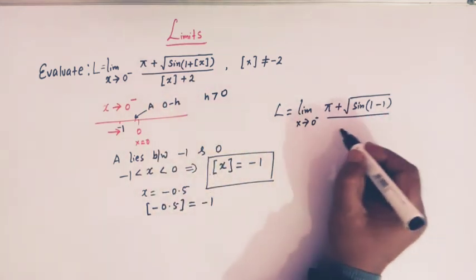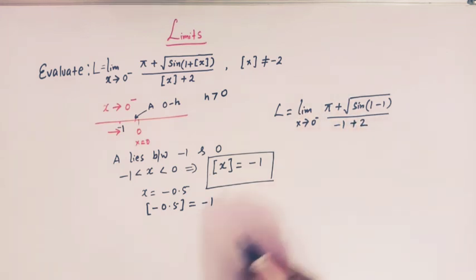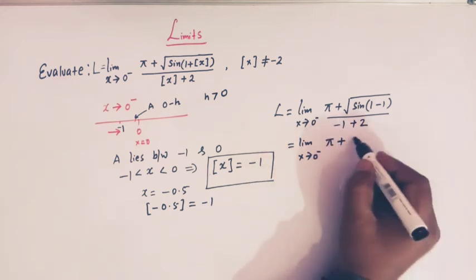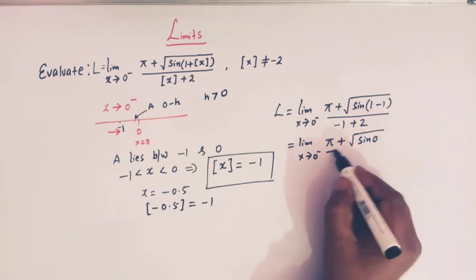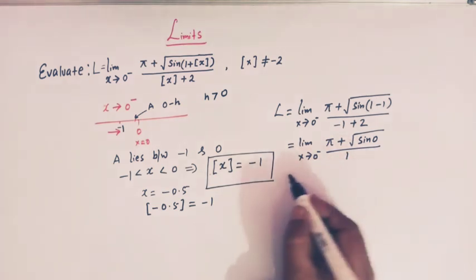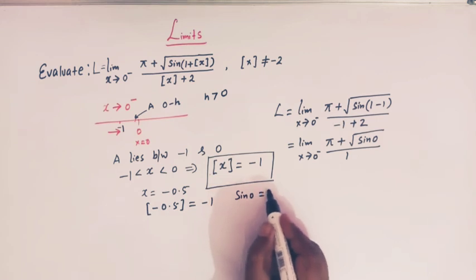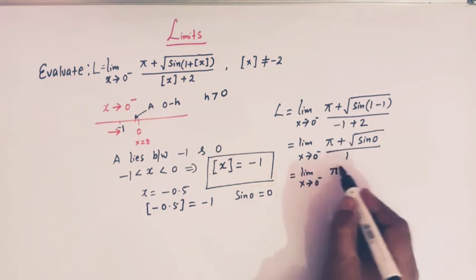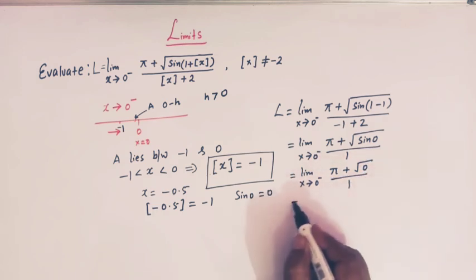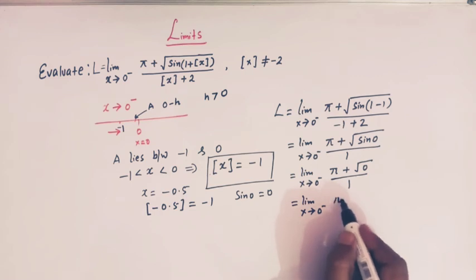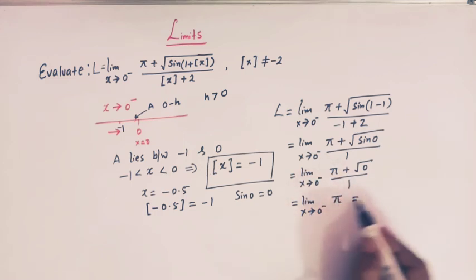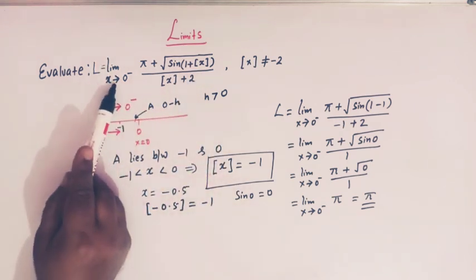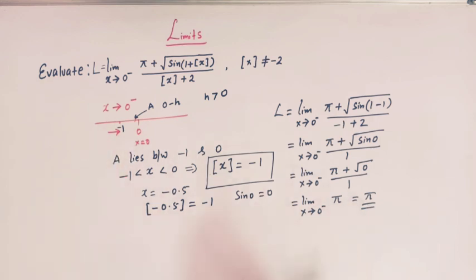Now we can simplify. The limit as x tends to 0 minus gives us pi plus square root of sin of 0, and the denominator is 2 minus 1 equals 1. We know that sin 0 equals 0. So the limit becomes pi plus square root of 0, divided by 1, which equals pi. So viewers, the value of this limit as x tends to 0 from the left is equal to pi.